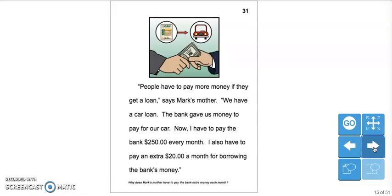People have to pay more money if they get a loan, says Mark's mother. We have a car loan. The bank gave us money to pay for our car. Now, I have to pay the bank $250 every month. I also have to pay an extra $20 a month for borrowing the bank's money.